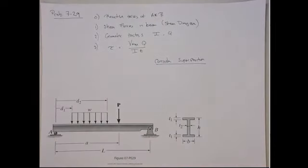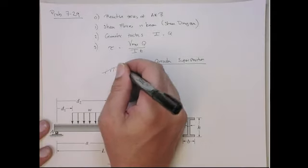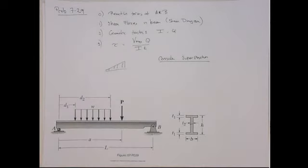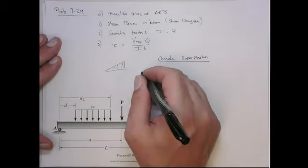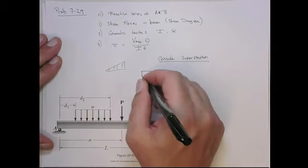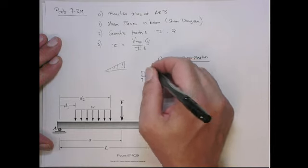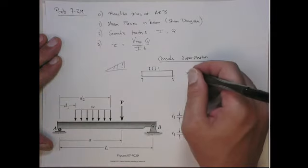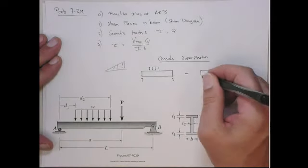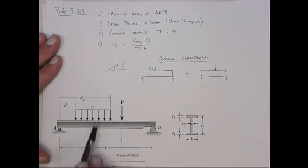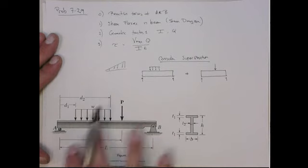Once you write a general program for a distributed load and for a point load — and maybe later for a linear distributed load — you can duplicate those parts of the code for more complicated cases with multiple point loads or a distributed load spanning the whole beam. I'm going to consider two cases: the general distributed load case, and the general point load case. The point load can occur anywhere, and the distributed load can have any width and occur anywhere on the beam.